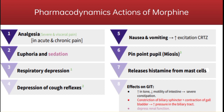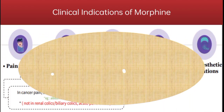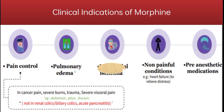Regarding the clinical indications of morphine: morphine is used to relieve moderate to severe pain such as cancer pain, severe burns, trauma, and visceral pains including abdominal, pelvic, and thoracic pain. It is also indicated in pulmonary edema, myocardial ischemia, painful conditions such as heart failure to relieve distress, and in pre-anesthetic medications.